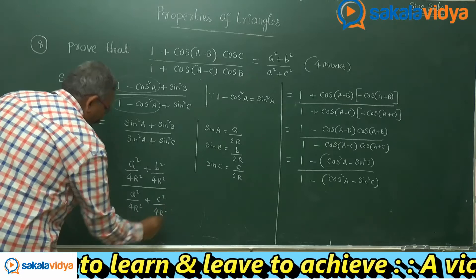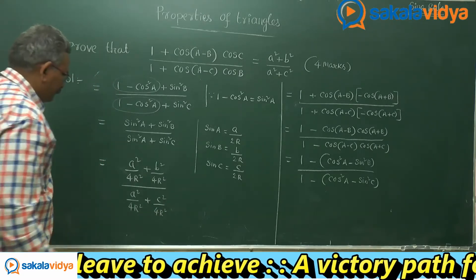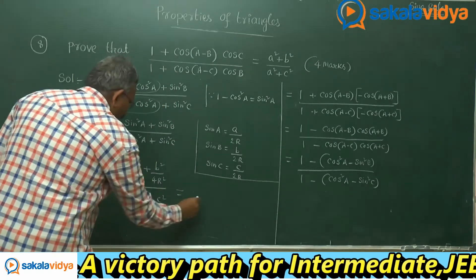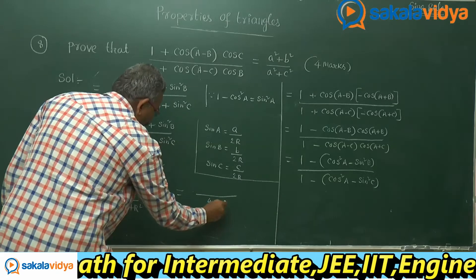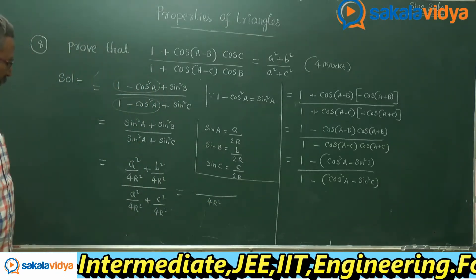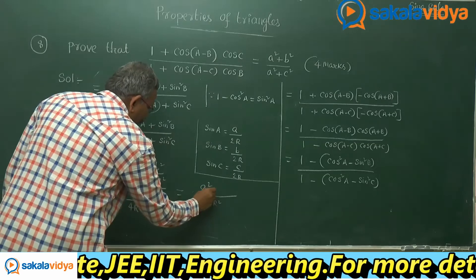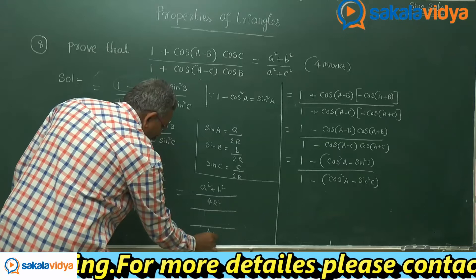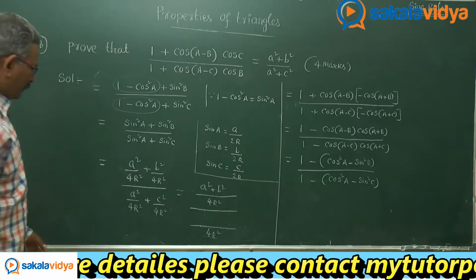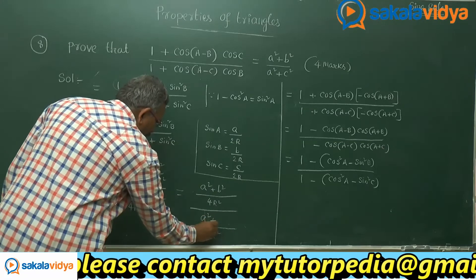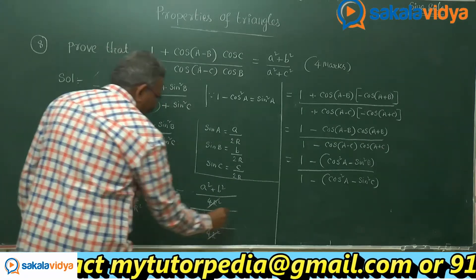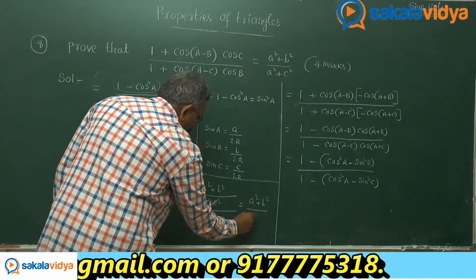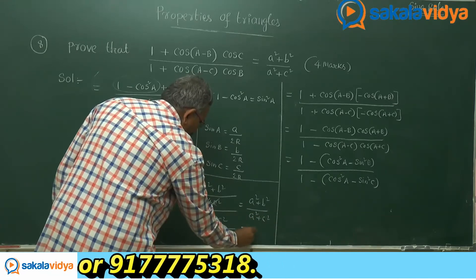Now 4R squared cancels throughout. This equals a squared plus b squared upon a squared plus c squared, which is the right hand side. Hence proved.